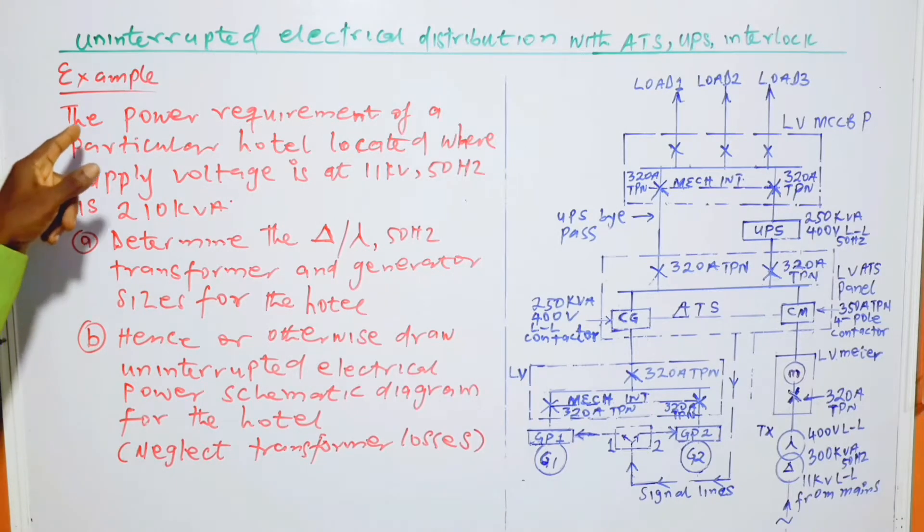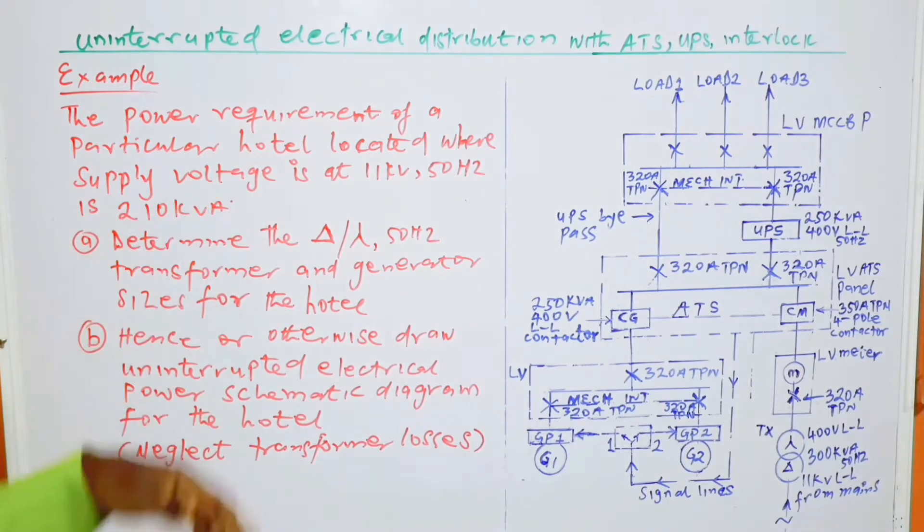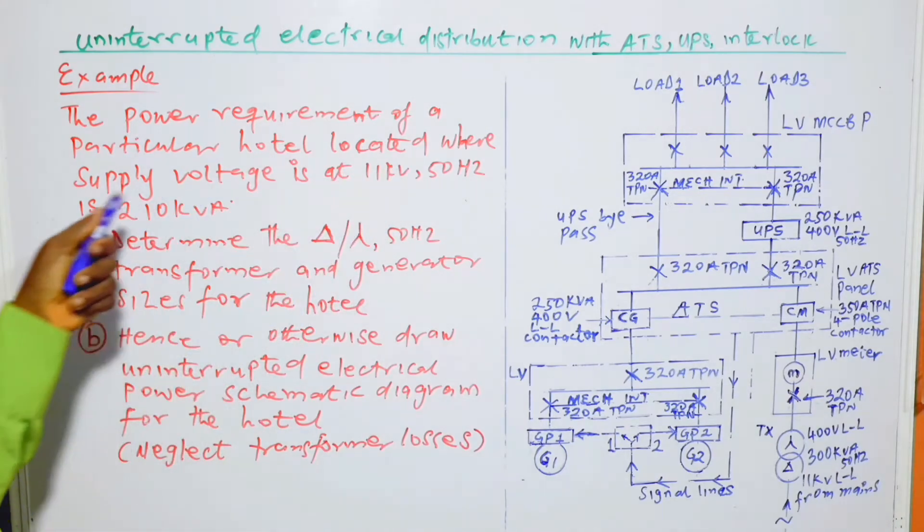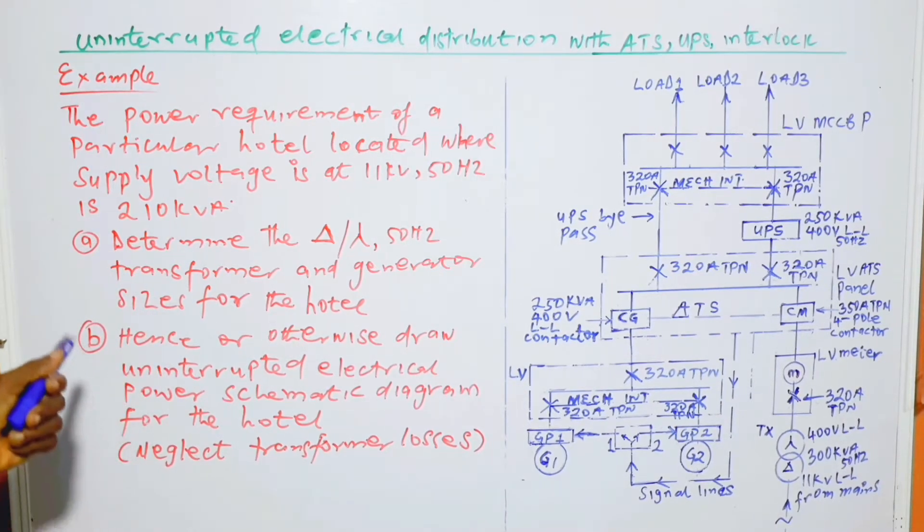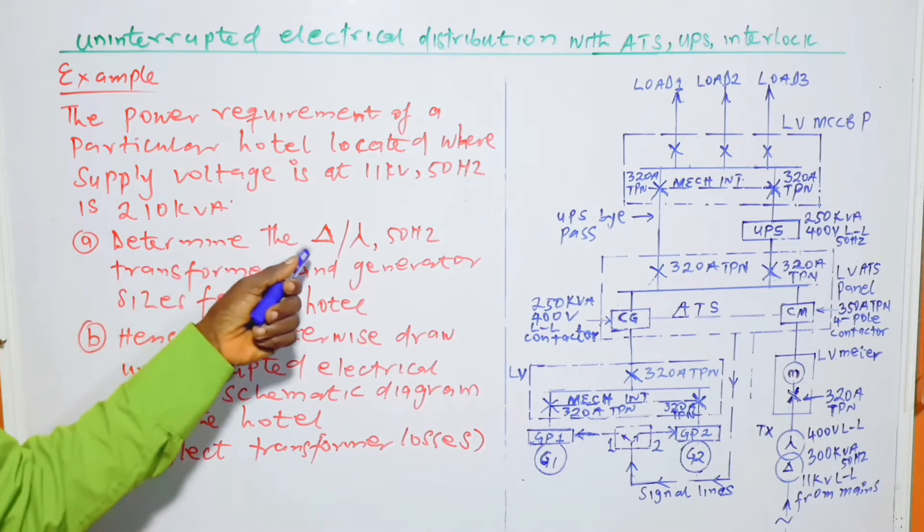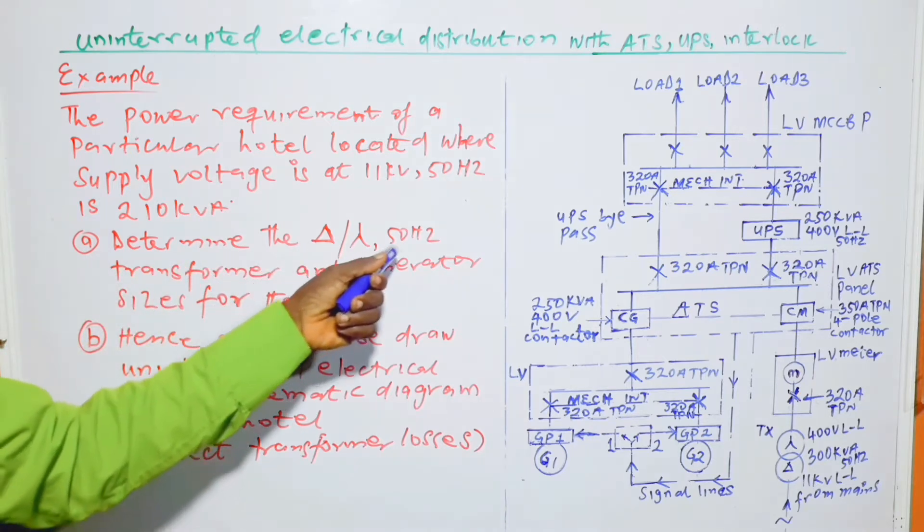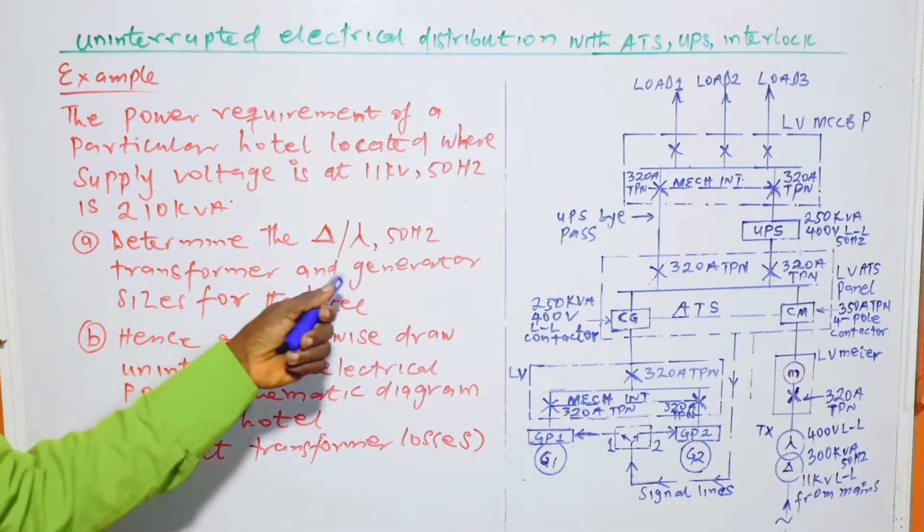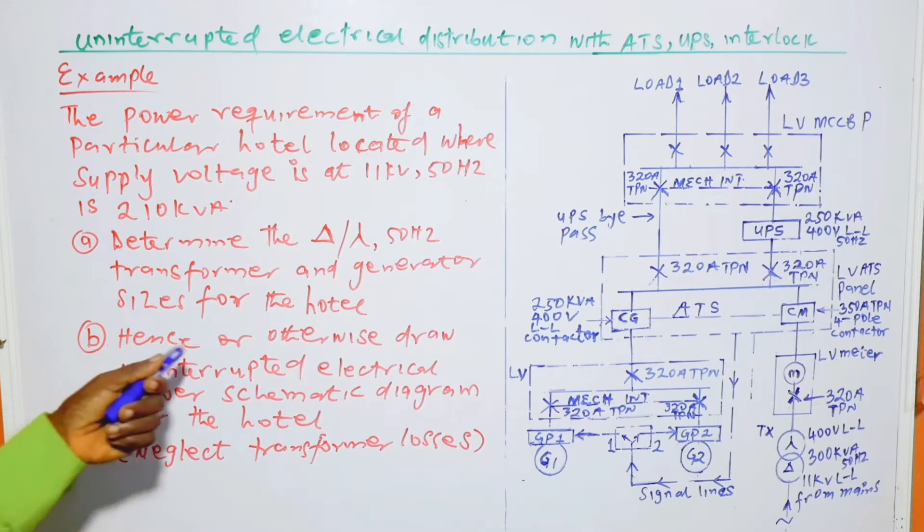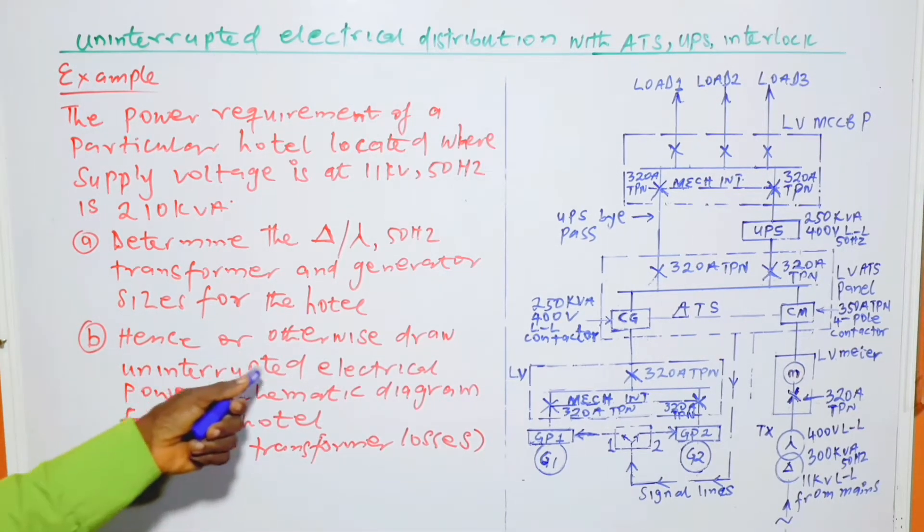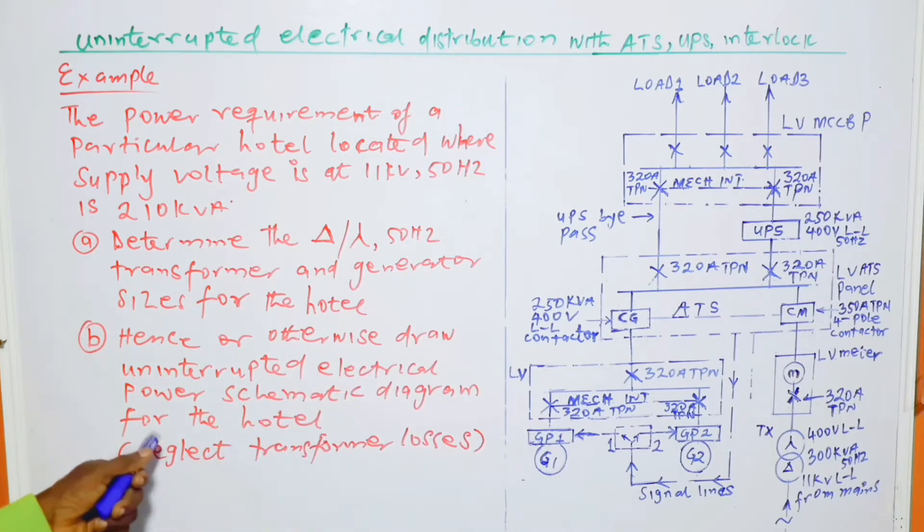Here we go. Example: The power requirement of a particular hotel located where supply voltage is at 11kV 50Hz is 210kVA. The questions are: determine the delta star 50Hz transformer and generator sizes for the hotel. Part B: hence or otherwise, draw uninterrupted electrical power schematic diagram for the hotel. Neglect transformer losses.